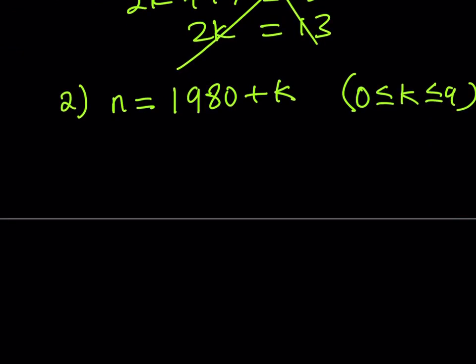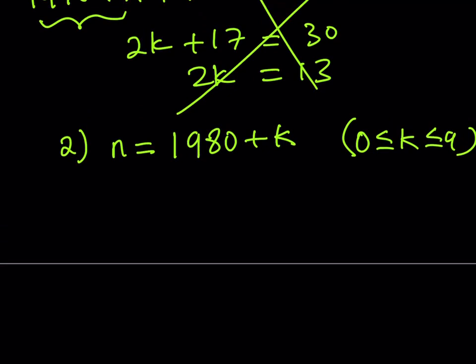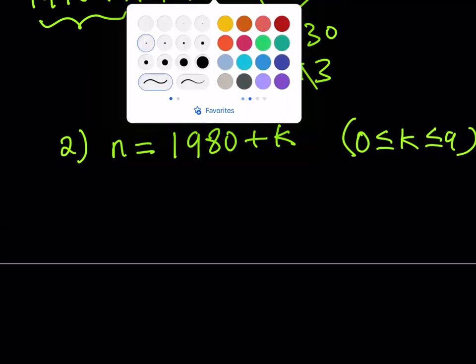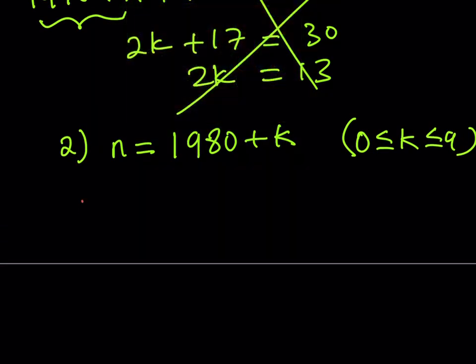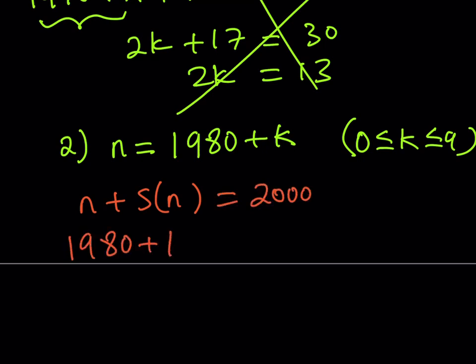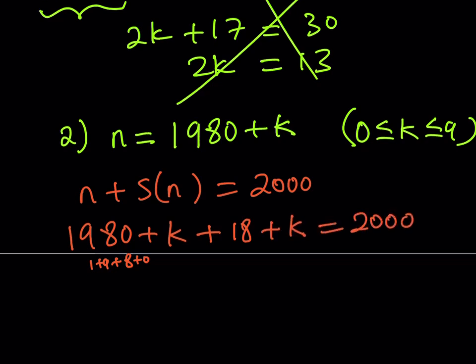So we'll do the same thing here. We have an equation. n plus S(n) is equal to 2000, and I'm going to substitute. So this is going to be 1980 plus k, and S(n) would be the sum of the digits of this number. So 1 plus 9 plus 8 plus 0, that's going to give me 18, and plus k, that's going to be the sum of the digits of this number, equals 2000. Let's see if we get a solution from here.